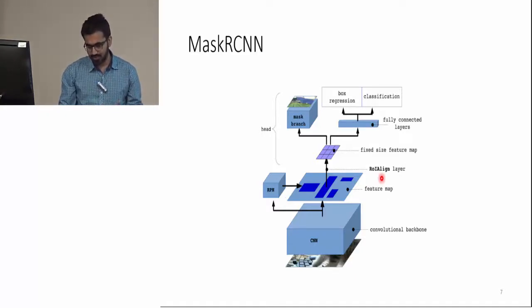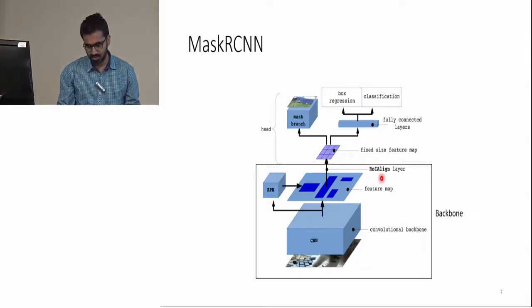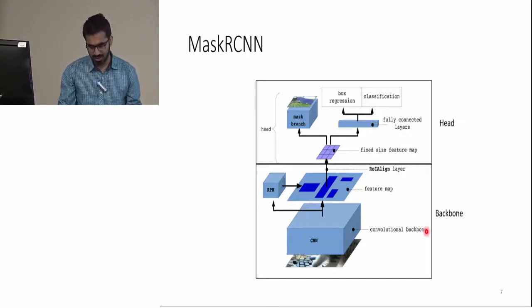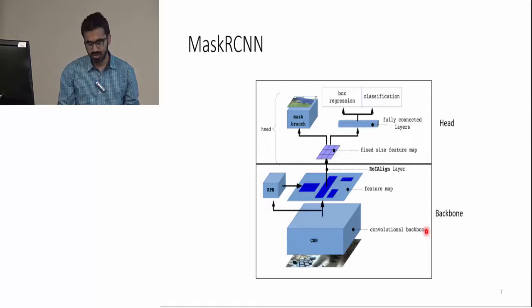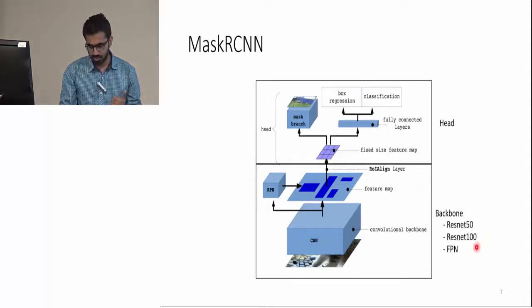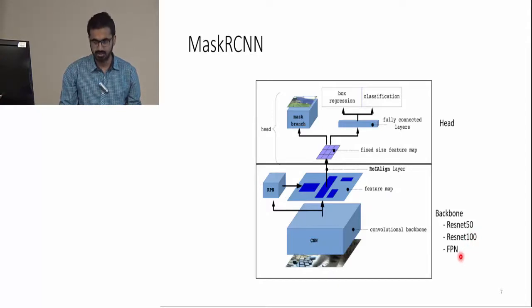This paper also conceptually divides the network into two parts: the backbone, which is responsible for feature extraction and region proposal, and the head of the network, which does classification, regression, and mask prediction. They experimented with different backbone architectures, using ResNet-50, ResNet-101, and feature pyramid networks.